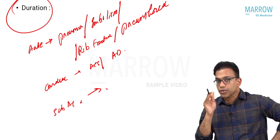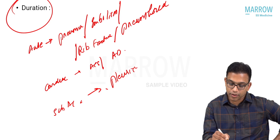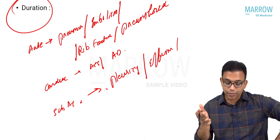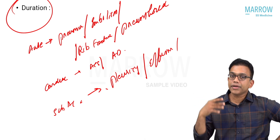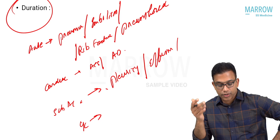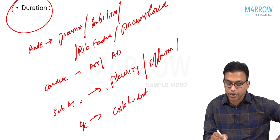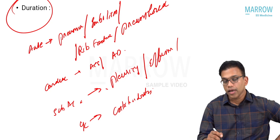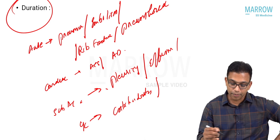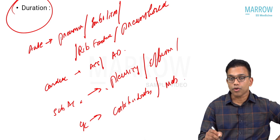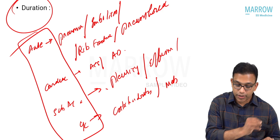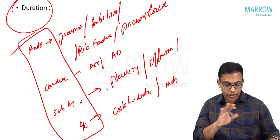Subacute onset chest pain may be secondary to pleurisy — inflammation of the pleura with or without effusion. There is dry pleurisy where pleural inflammation causes pain without significant effusion. Chronic chest pain is usually musculoskeletal in origin, such as costochondritis, where patients complain of central chest pain coming and going over months or even one to two years. Metastasis to the chest wall or ribs can also cause chronic pain.